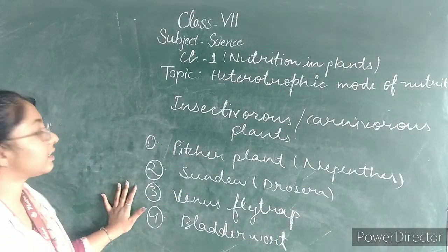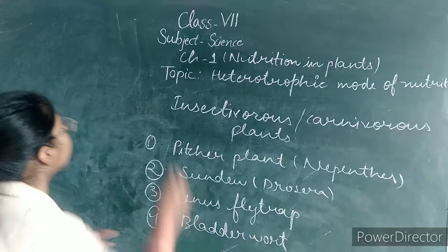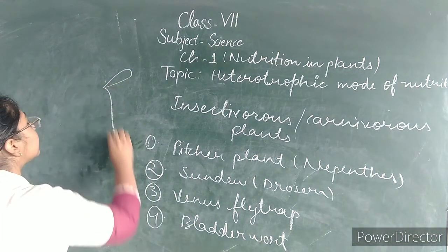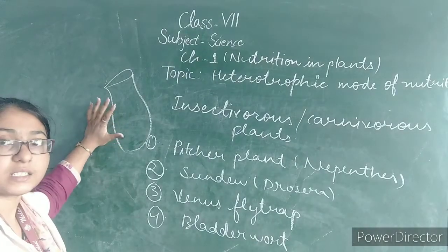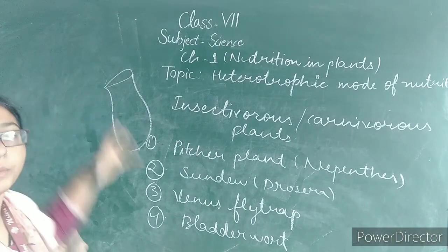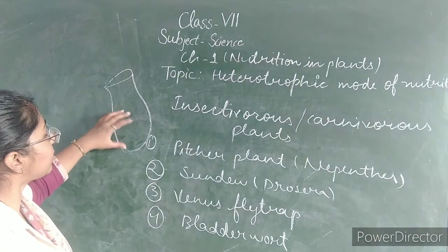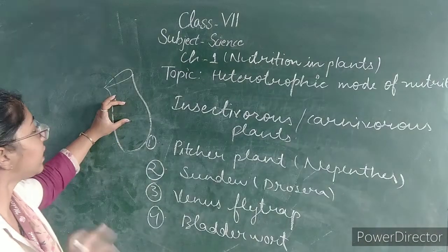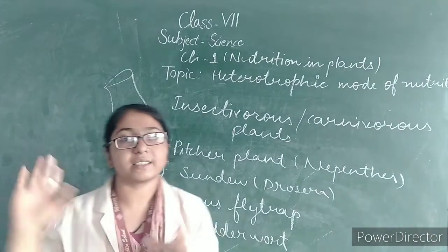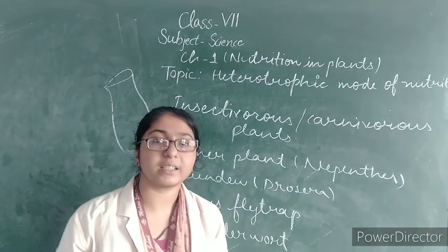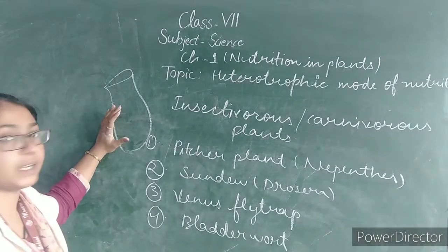Now we start with pitcher plant, also called Nepenthes. It has the shape of a pitcher. At the bottom, there is sweet digestive juice which attracts insects. When the insect goes down, there are hairs on the sides which do not allow the insect to come out. So insects are trapped, killed, and the plant absorbs nutrients from them.